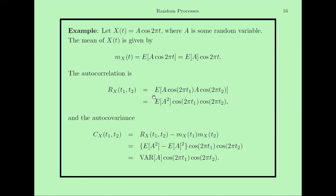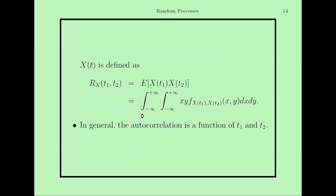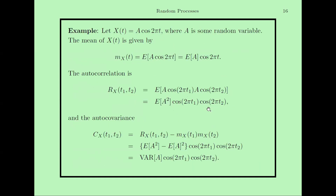I have included these examples in problem sheet number 9, which will be available to you next week. Let me do one example here. Let X(t) = A·cos(2πt), where A is a random variable. We want to find the mean. Since only A is the random variable, the mean is the expected value of A·cos(2πt). In the same way, we can find the autocorrelation and the autocovariance. These are the few definitions I wanted to discuss before starting Gaussian random processes.